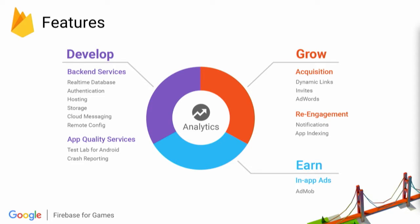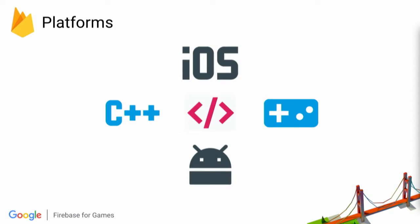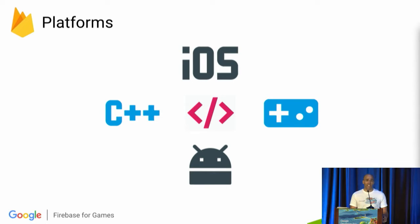I'll provide an overview of a subset of the features. After working with our developer community for the past few months, I'm proud to announce today the 3.0 release of our mobile SDKs for C++ and Unity developers that target iOS and Android. You'll be able to access Firebase from your favorite game engine. Firebase supports iOS, Android, and the web, and we have admin SDKs for your servers.